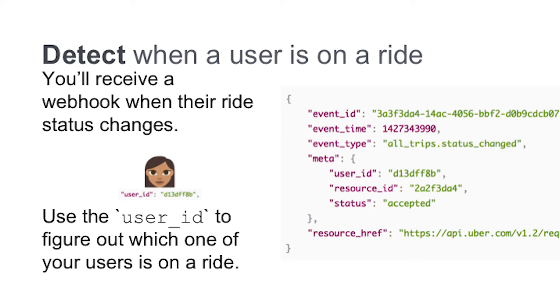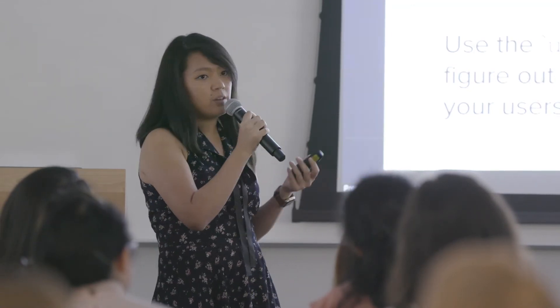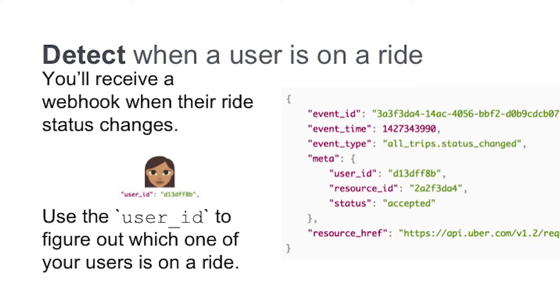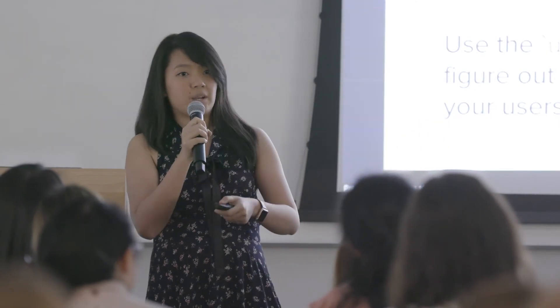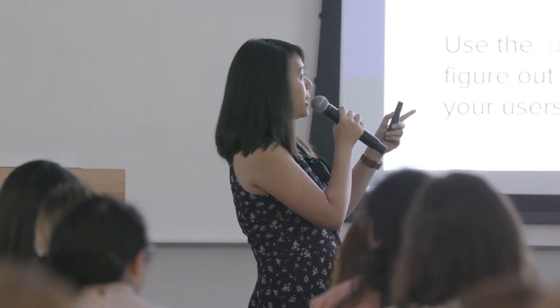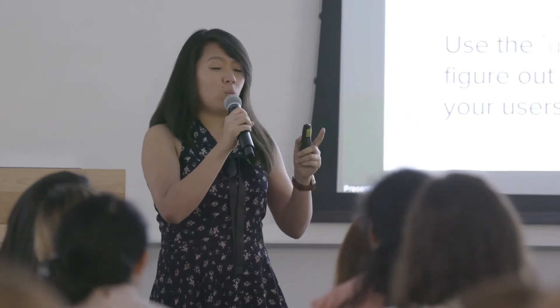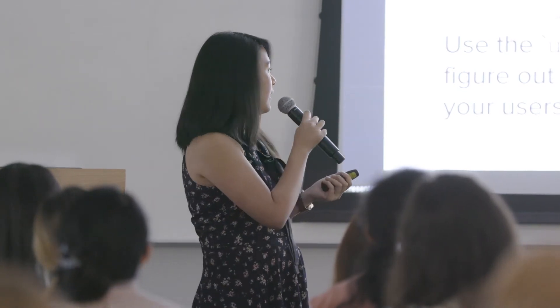Now that we have permission to access this user's data, we can detect whenever they get on an Uber. When they get on an Uber, you'll receive a notification in the form of a webhook whenever their ride status changes — whenever they've requested it, whenever they get into the car, or when they arrive at their destination, and a few other statuses in between. You can use the user ID that's part of this payload to figure out which one of your app users just went on a ride.